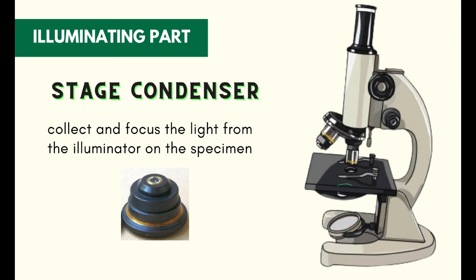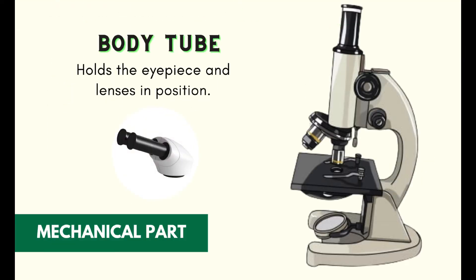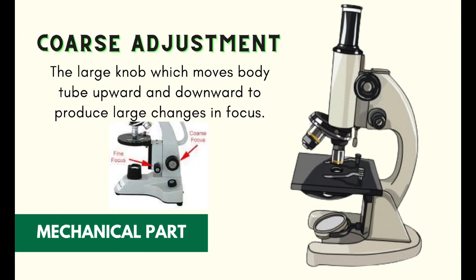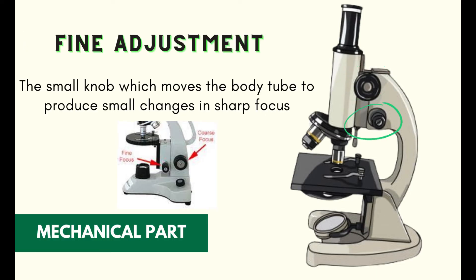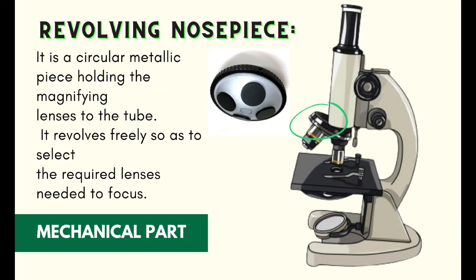These are the mechanical parts of a microscope. The body tube holds the eyepiece and lenses in position. The coarse adjustment knob is the large knob which moves the body tube upward and downward to produce large changes in focus. The fine adjustment knob is the small knob which moves the body tube to produce small changes in sharp focus. The revolving nosepiece is a circular metallic piece holding the magnifying lenses to the tube — it revolves freely so as to select the required lenses needed to focus.